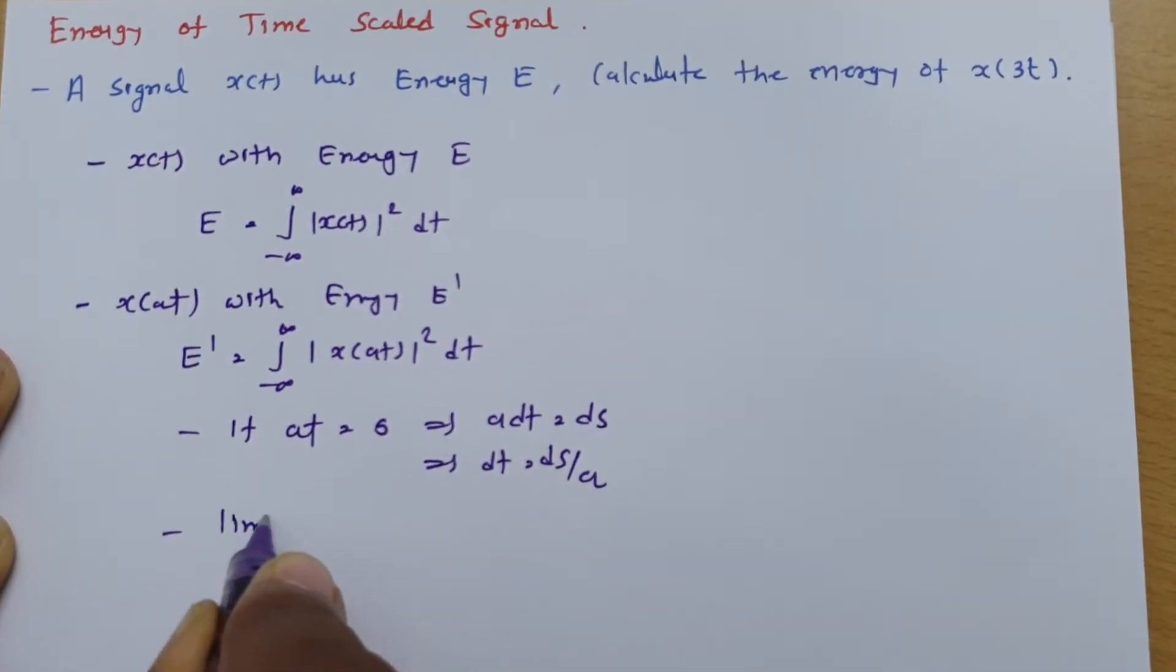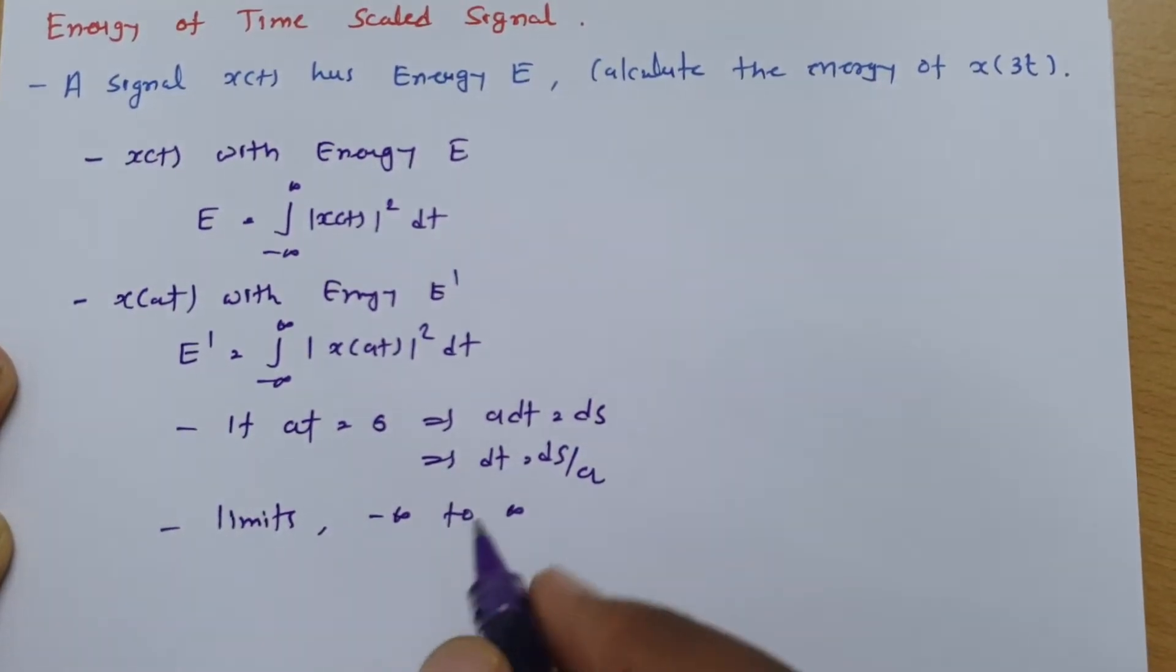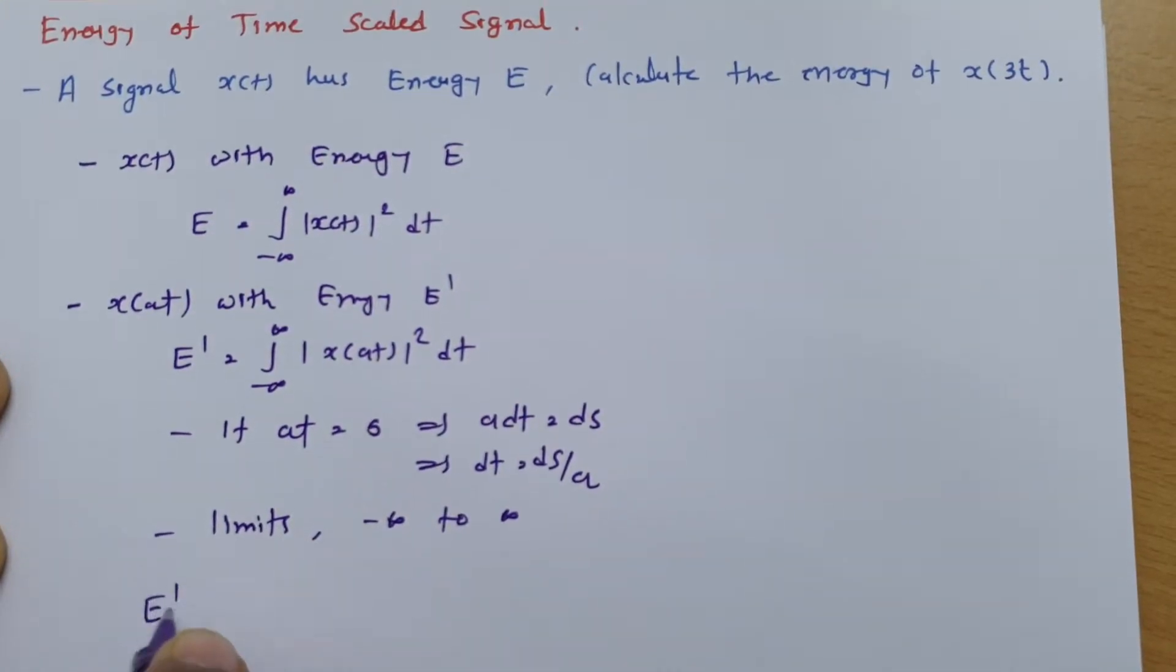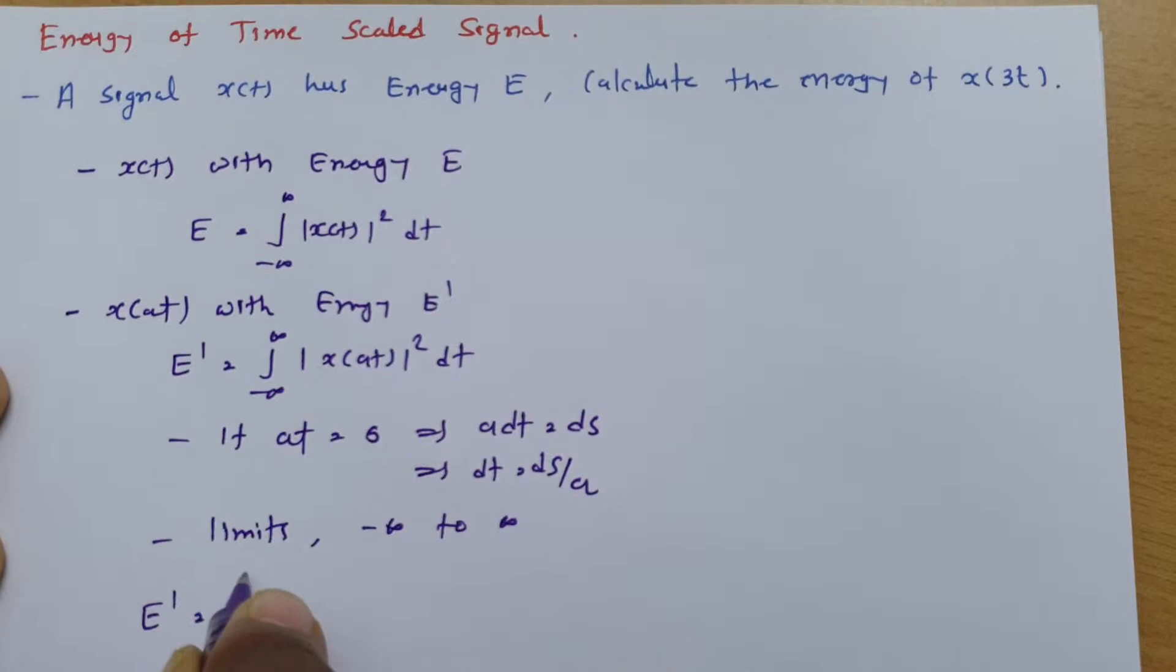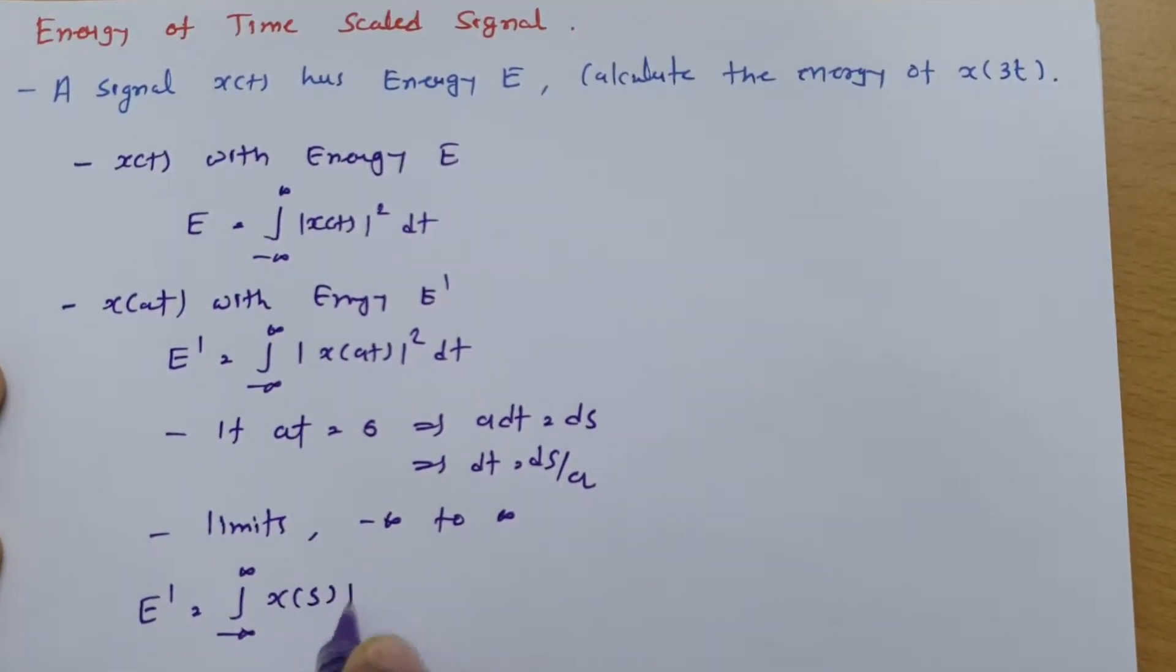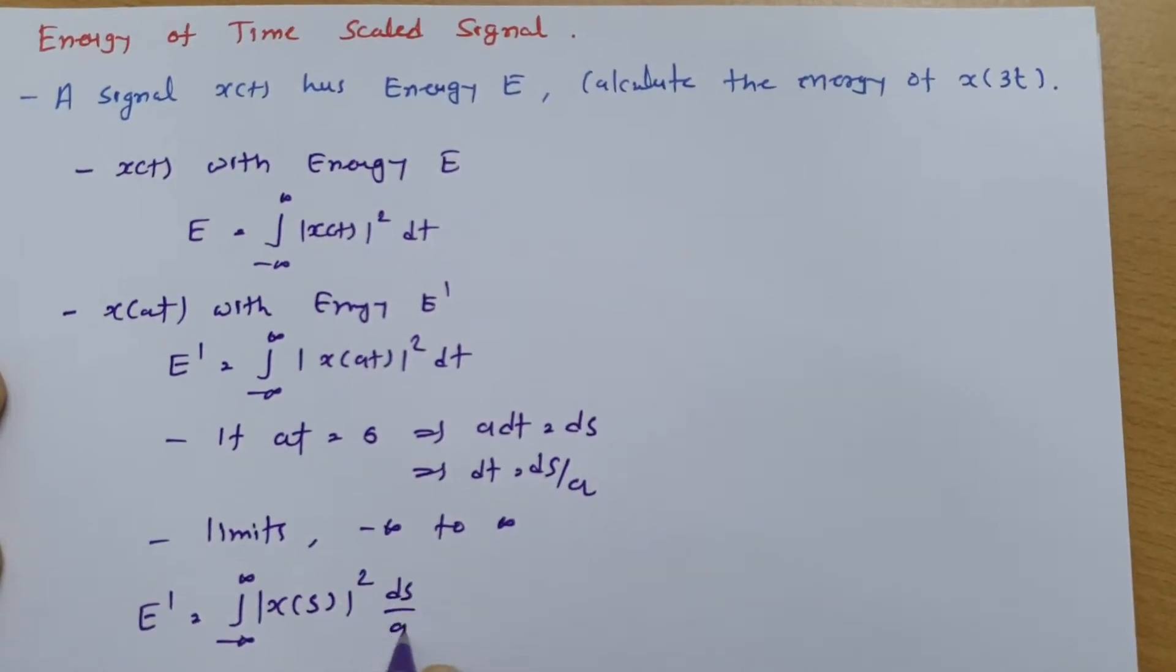So limits will be from minus infinite to infinite only. So if you place that in this basic formula, you can say E' equals integral from minus infinite to infinite |x(s)|² ds divided by a.